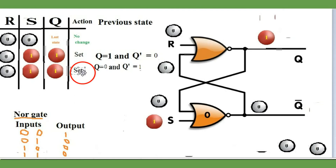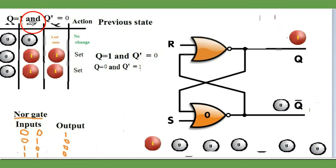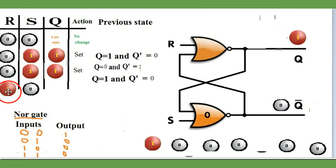This is very, very important to remember. Now let's go to the next case. The previous state is Q=1 and Q-bar=0, and the two inputs R and S are 1 and 0 respectively. If R is 1 and S is 0, what will happen? Let's see.